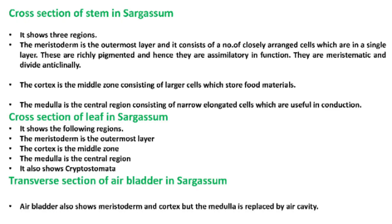Dear students, in this video I am going to discuss about the second part of Sargassum. Cross section of stem in Sargassum shows three regions. The meristoderm is the outermost layer and it consists of a number of closely arranged cells which are in a single layer.